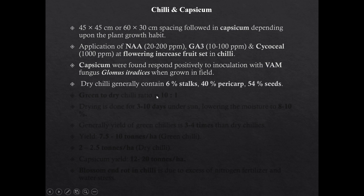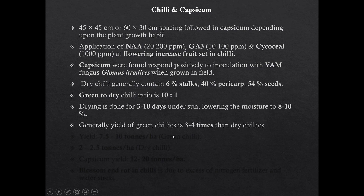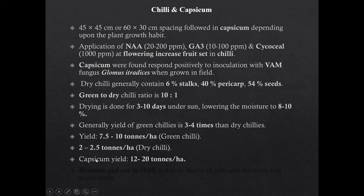Dry chili contains 6 percent stalk, 40 percent pericarp, and 54 percent seeds. Rain to dry chili ratio is 10:1. Drying is done for 3 to 10 days under sun to lower the moisture to 8 to 10 percent. Generally, yield of green chilies is 3 to 4 times that of dry chilies. Yield of green chili is 7.5 to 10 tons per hectare. Yield of dry chili is 2 to 2.5 tons per hectare under irrigated condition. Capsicum yield is between 12 to 20 tons per hectare.